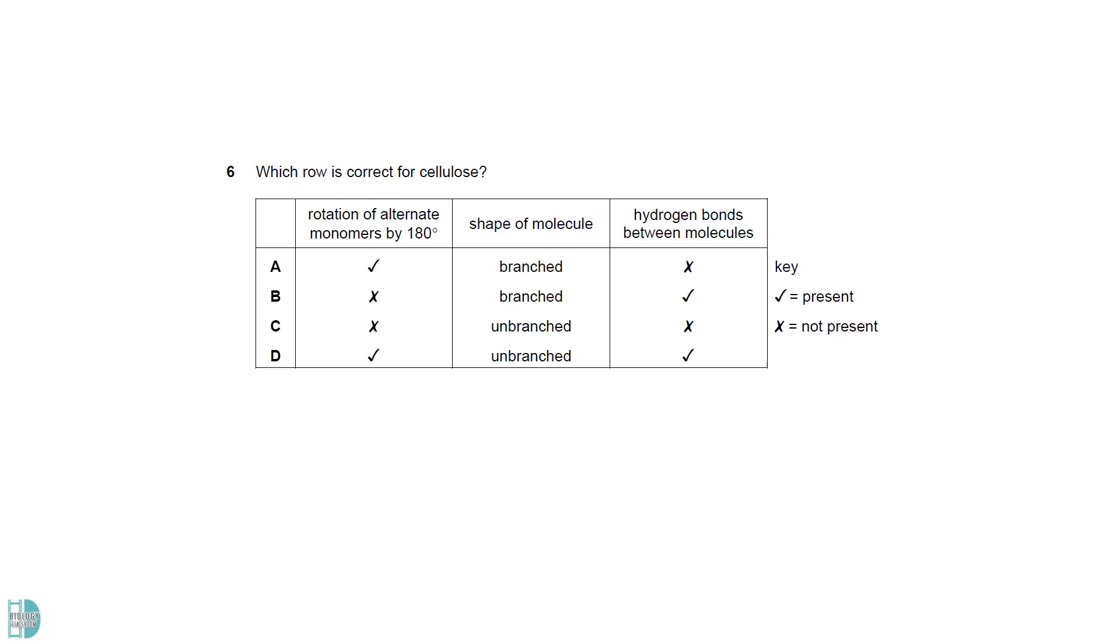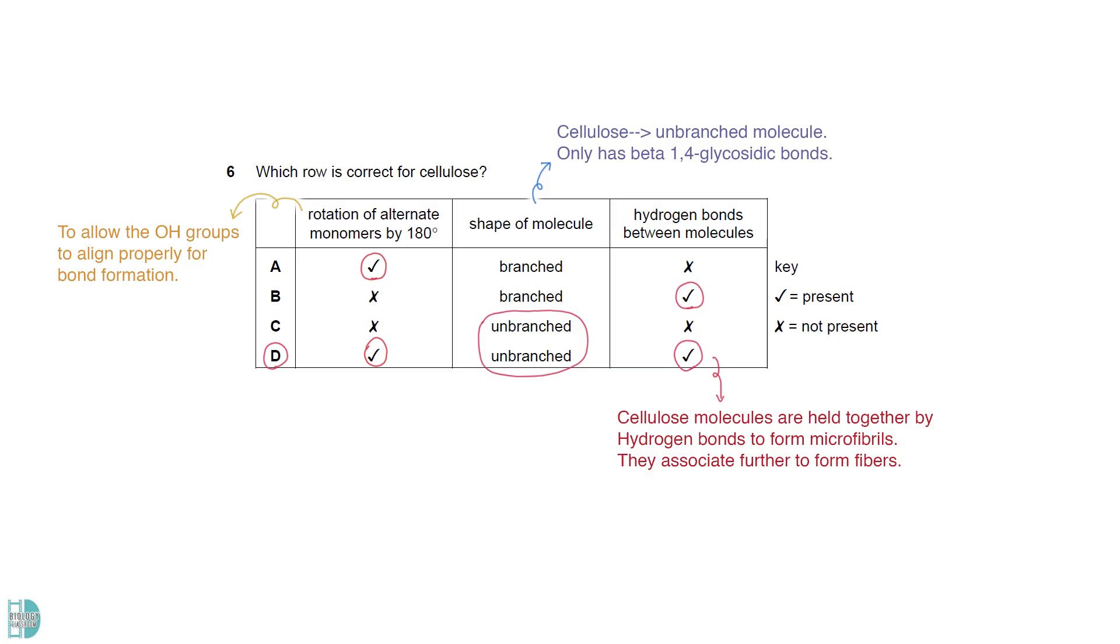In cellulose, every other beta-glucose molecule rotates 180 degrees to allow the hydroxyl groups to align properly for bond formation. Cellulose is an unbranched molecule. It only has beta-1-4 glycosidic bonds. Cellulose molecules are held together by hydrogen bonds to form microfibrils. They associate further to form fibers.